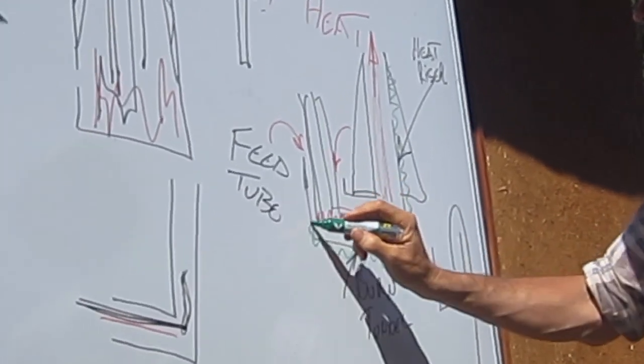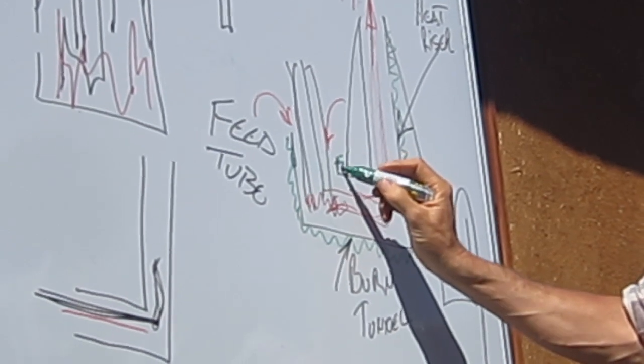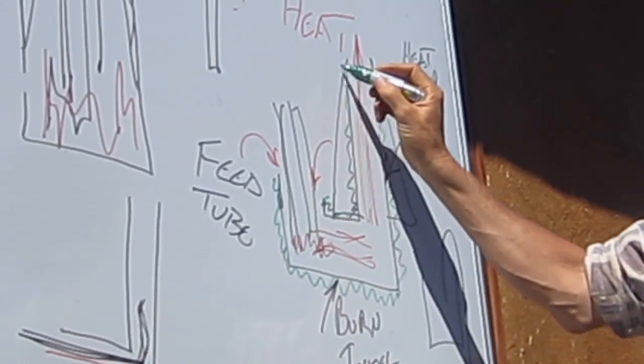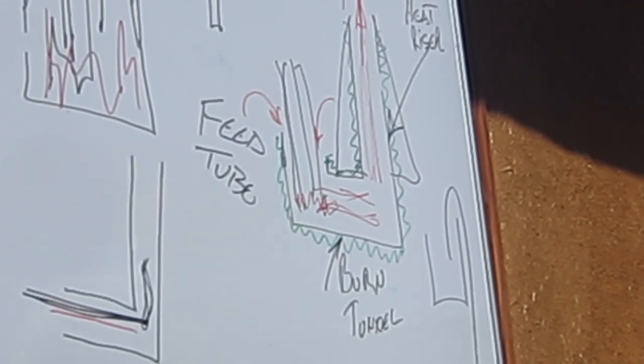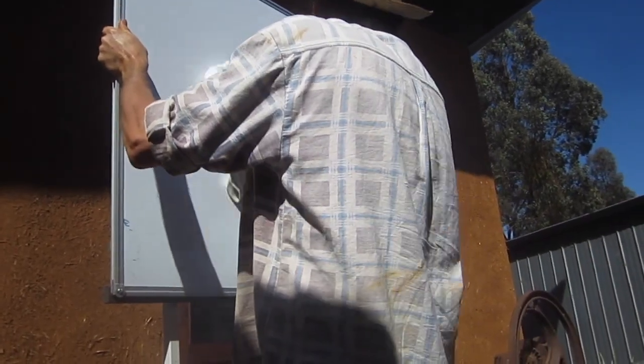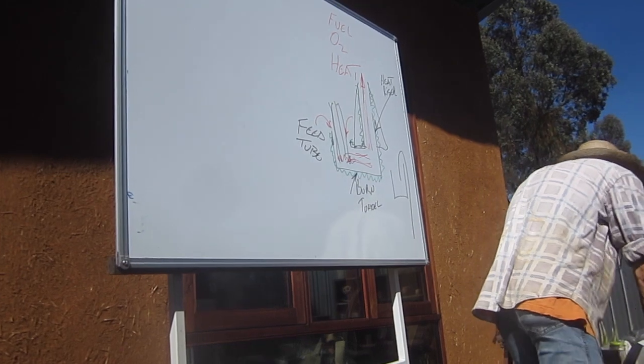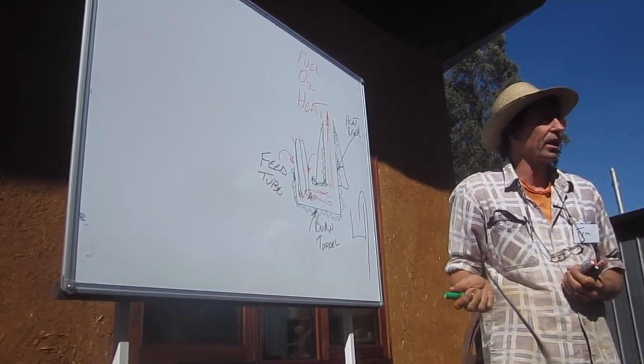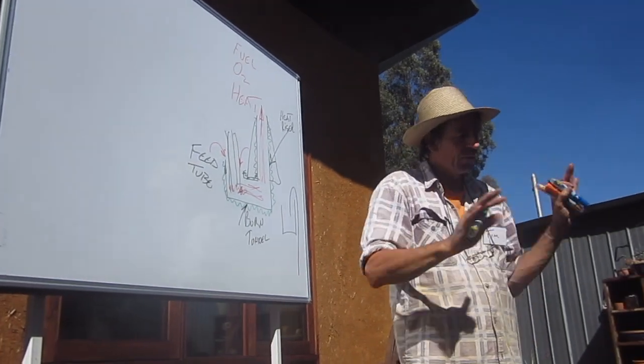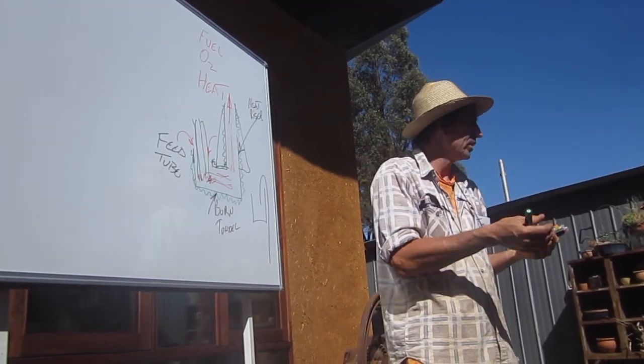If we compare this to your typical box wood stove, there's a fundamental difference. Rocket stoves let the combustion process happen in the most efficient manner we can, and then we extract the heat after. We get everything done, then we use the heat.